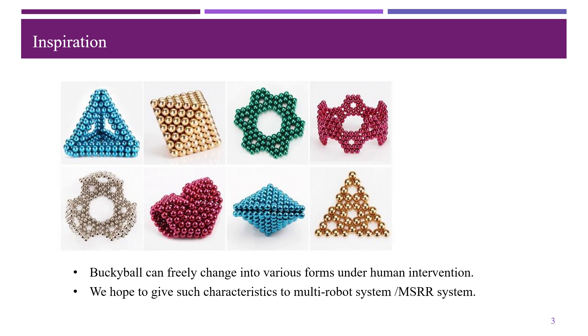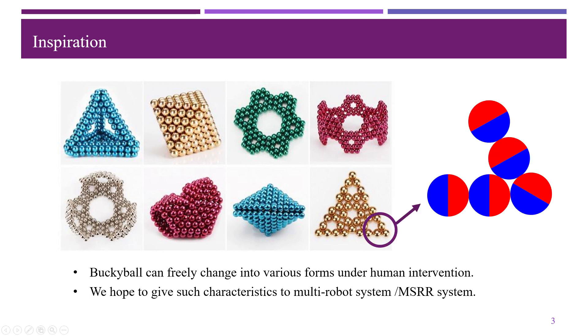Now the question is, how to apply this characteristics of the Buckyball to the robot. Following the Buckyball, we need to design a spherical robot that can be magnetically connected to each other. But we know that the Buckyball is a magnet with only two poles. They still have some connection constraints and are not really freeform.